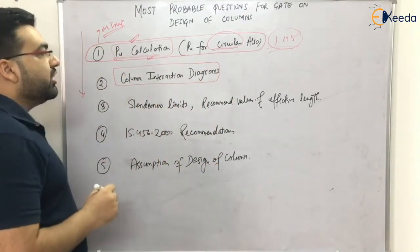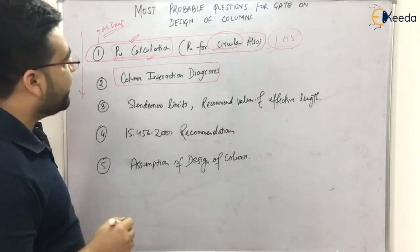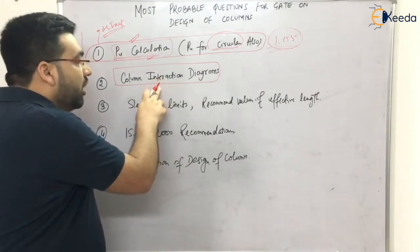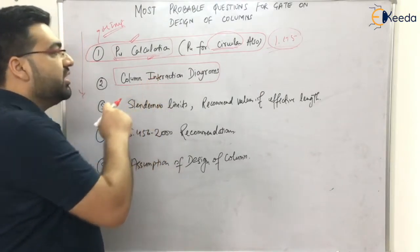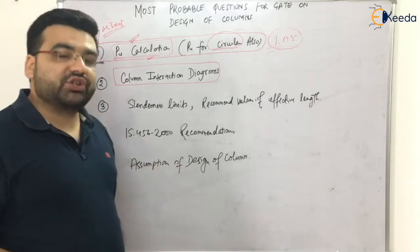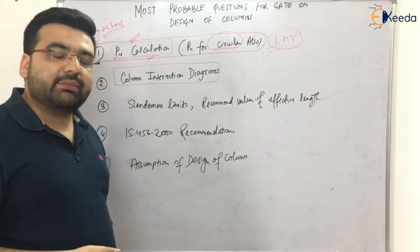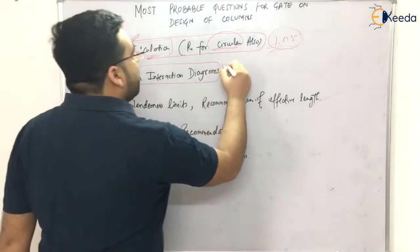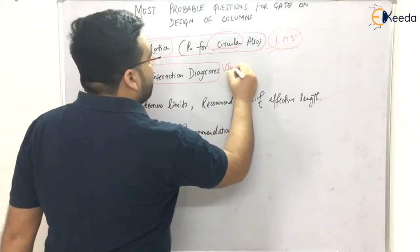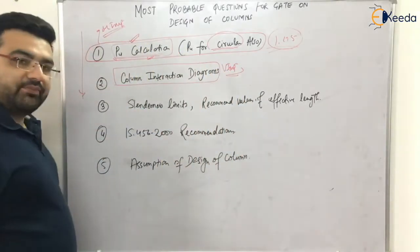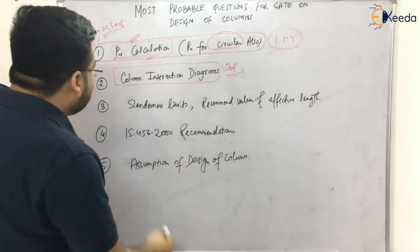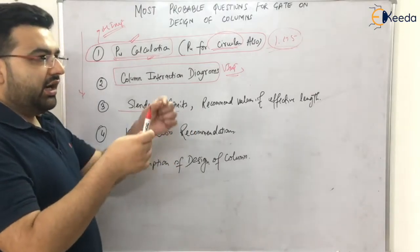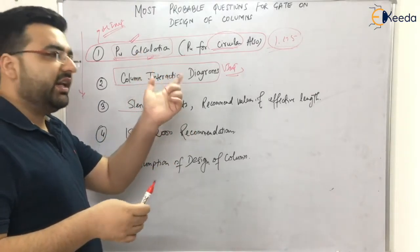The next important topic is the column interaction diagram. When I was explaining this concept, I felt that this portion of column design is still largely untouched in GATE examinations, which makes it a very important area to focus on.